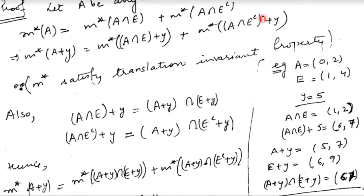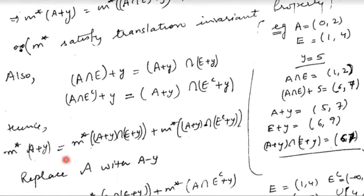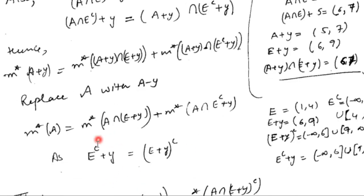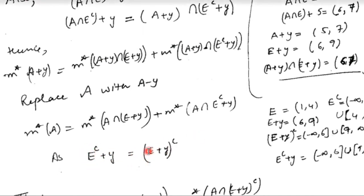Substituting these values, we have the outer measure of A plus y equals the outer measure of (A plus y) intersection (E plus y), plus the outer measure of (A plus y) intersection (E complement plus y). Furthermore, we can see that E complement plus y is the same as (E plus y) whole complement. You can verify this by considering any element from either side.